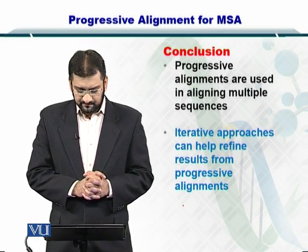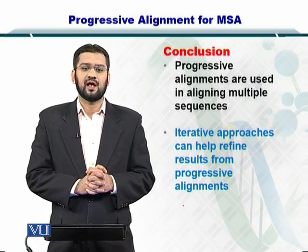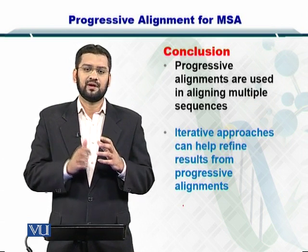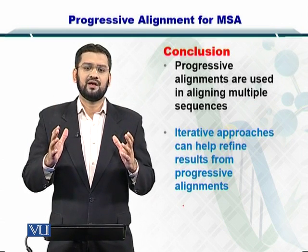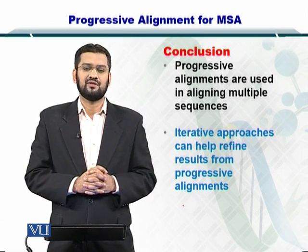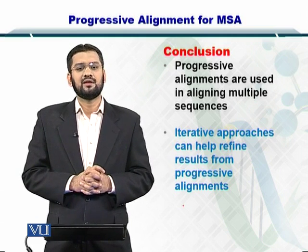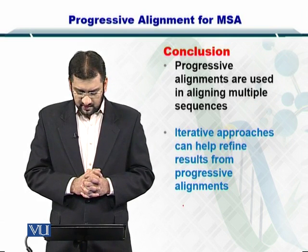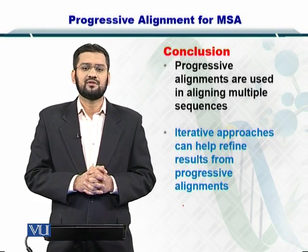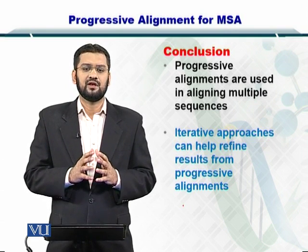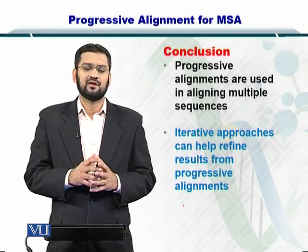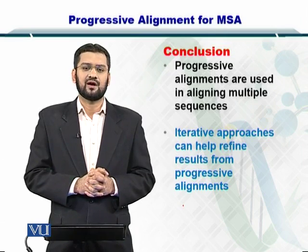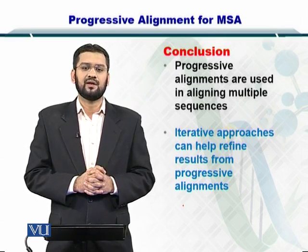In conclusion, progressive alignments can help you perform multiple sequence alignment. In progressive alignment, you repeatedly align sequences to arrive at a guide tree using the similarity between sequences, and then you create the relationships between them. These approaches can help refine results, especially if improvement is needed — you can iterate the process by using different pairs to start the progressive alignment in the MSA.